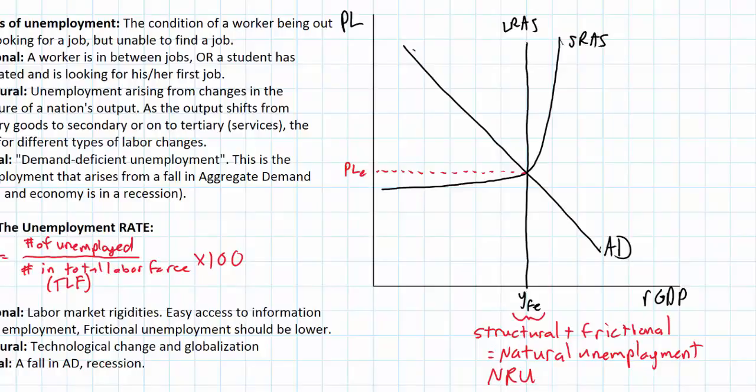However what happens if a nation experiences a demand deficient recession? Let's show what happens if aggregate demand falls in a nation due to a fall in either consumption, investment, net exports, maybe an increase in taxes or a decrease in government spending. We'll see AD fall to AD1.